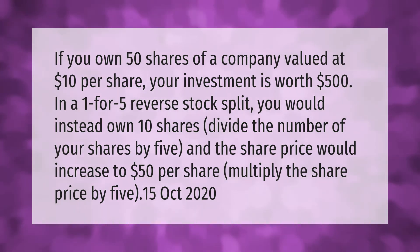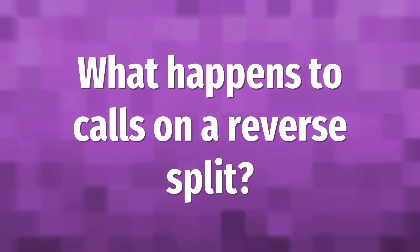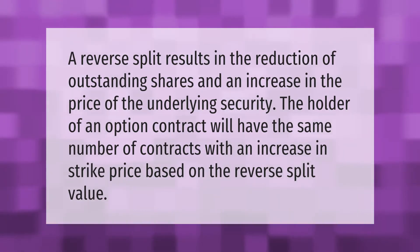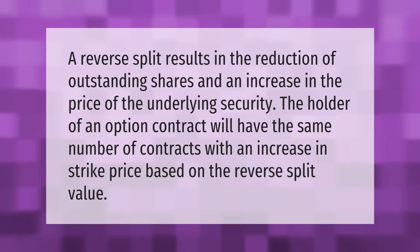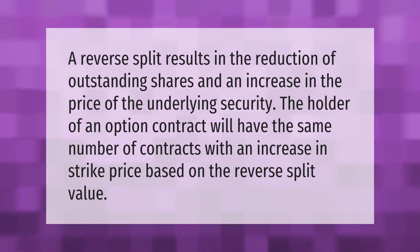Multiply the share price by 5. A reverse split results in the reduction of outstanding shares and an increase in the price of the underlying security. The holder of an option contract will have the same number of contracts, with an increase in strike price based on the reverse split value.